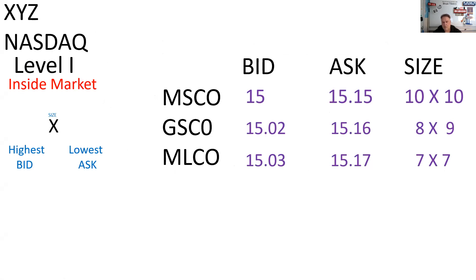Let's go over this. The bid and the ask here is from the market maker's perspective. I have three market makers: Morgan Stanley, Goldman Sachs, and Merrill Lynch. Those are called their MPIDs — their market participant ID, kind of like a vanity license plate. This is a NASDAQ security, as you can see here in the left-hand corner of the slide.